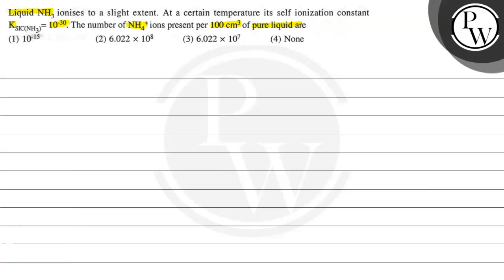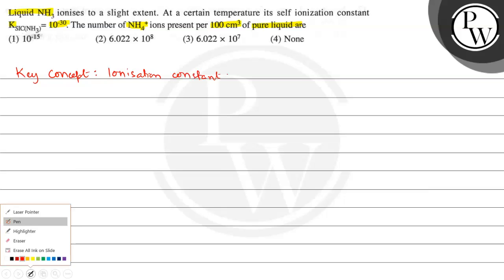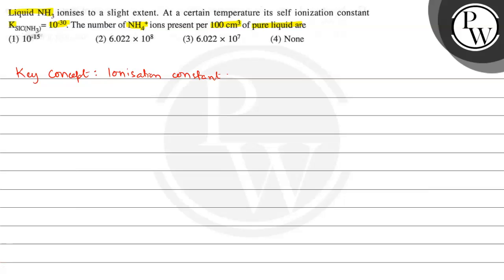The key concept here is the ionization constant. We are talking about the ammonia ionization. The ionization is: 2NH3 gives NH4+ plus NH2−. If there were n moles of NH3, then the dissociated number of moles of NH3 will be n minus 2x, and the number of moles of NH4+ will be x.